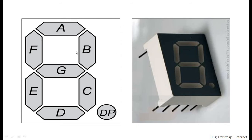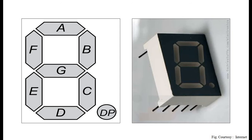You can see here segments a, b, c, d, e, f, g — these are seven LEDs — and a decimal point, DP. In such a fashion the seven segment display is represented. Here an actual single-digit seven segment display is shown with its connections, which we will go through in detail in the latter part of this video.